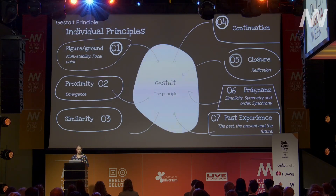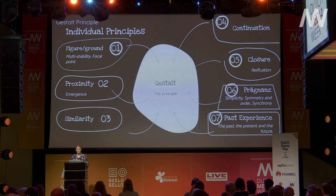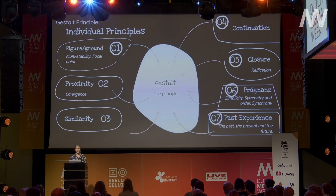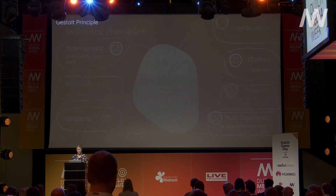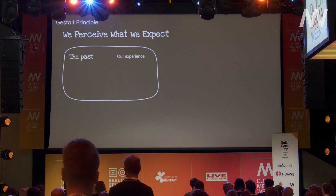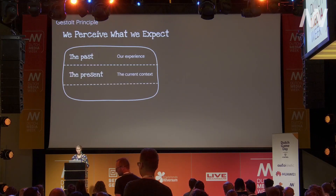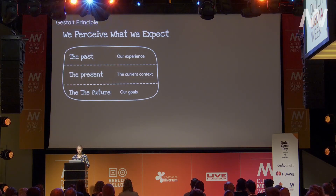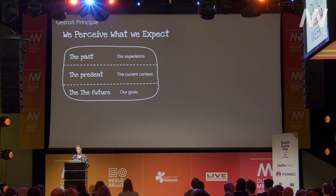The principles we'll cover are Figure Ground, Continuation, Closure, Pregnance, and Past Experience. The first one: we perceive what we expect. This is our past experience — based on our own personal experience, culture, and the time period we grew up in. Our brains have a limit on our attention, making us more prone to take paths that are familiar as it takes less effort. Our brain is very lazy. Recognition is easy for the brain as it relies on past information.